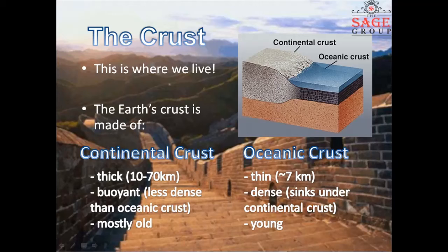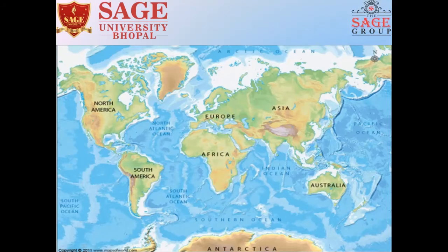What are the basic differences between continental crust and oceanic crust? Continental crust is very thick, which is 10 to 70 kilometers. Oceanic crust is thin, nearly 7 kilometers. Second point, continental crust is wide and less dense than oceanic crust, whereas oceanic crust is dense. This is the geographical division of earth, which shows different continental countries and oceans.